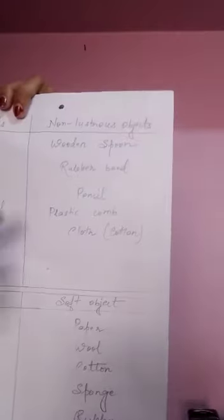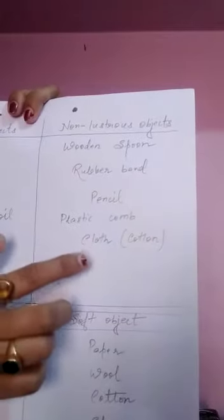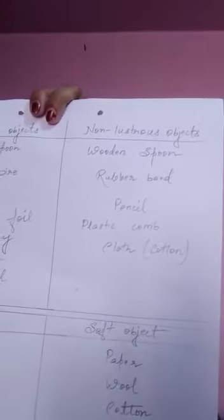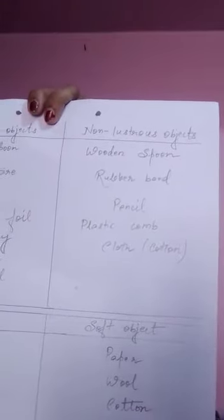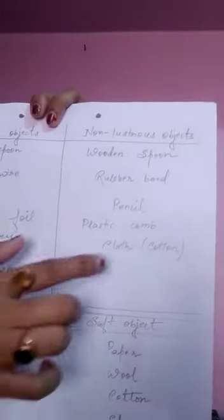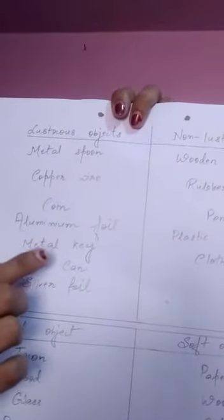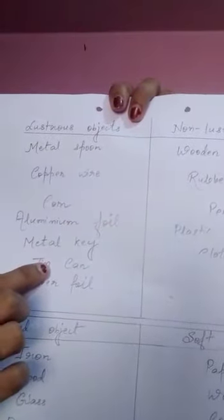Non-lustrous objects include rubber band, pencil, plastic comb, and cotton cloth — they all do not have the property to shine, so they come under non-lustrous objects. However, silk cloth does shine, so silk cloth comes under lustrous objects.